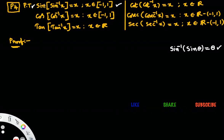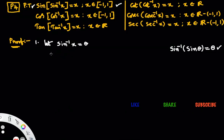This formula holds good only when x belongs to the closed interval minus 1 to 1. To prove sine of sine inverse x equals to x, let sine inverse x equal to theta. From the definition of the inverse sine function, x equals to sine theta.